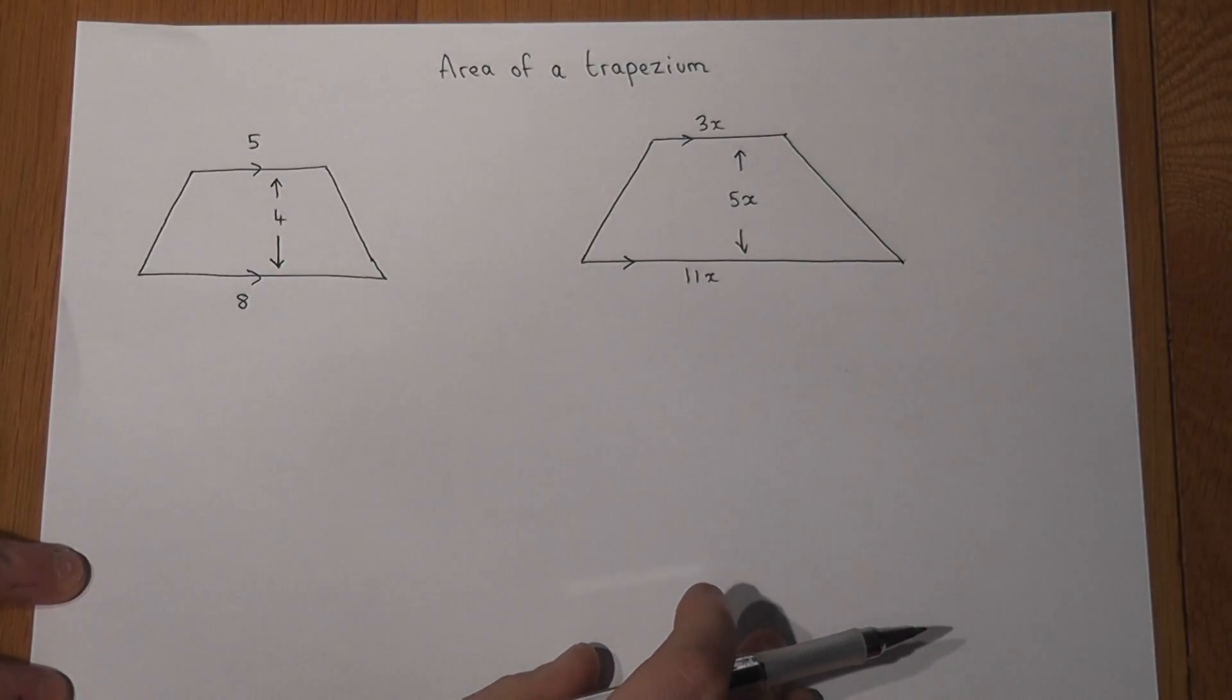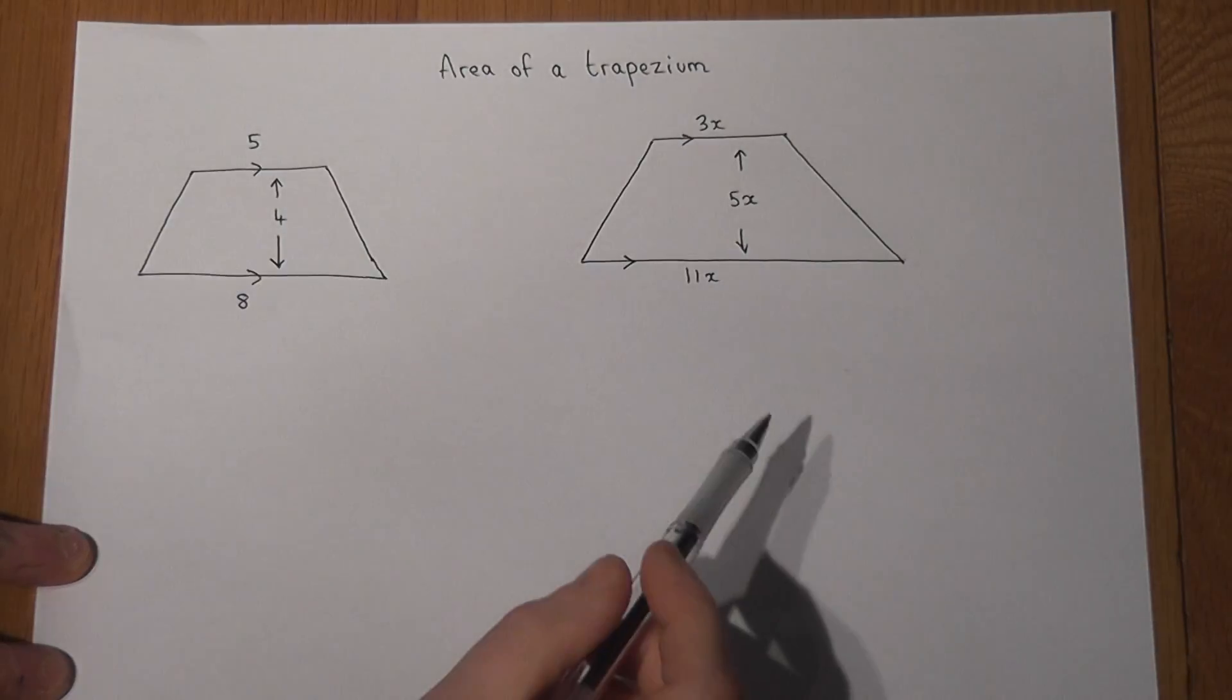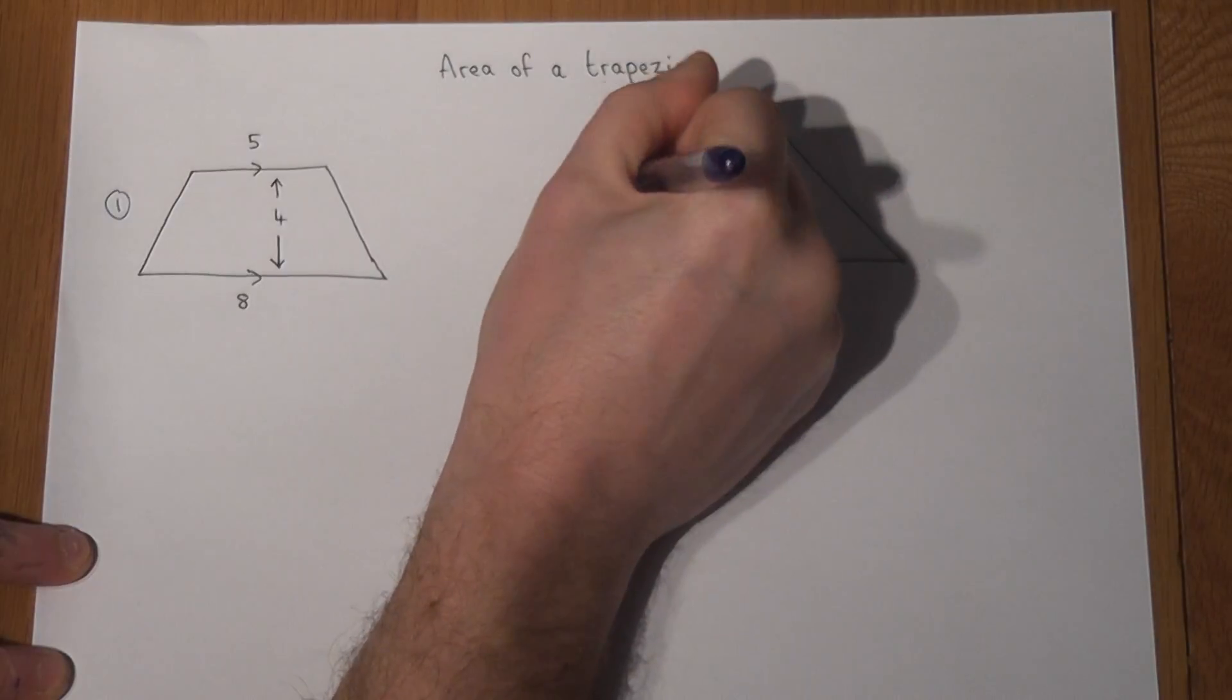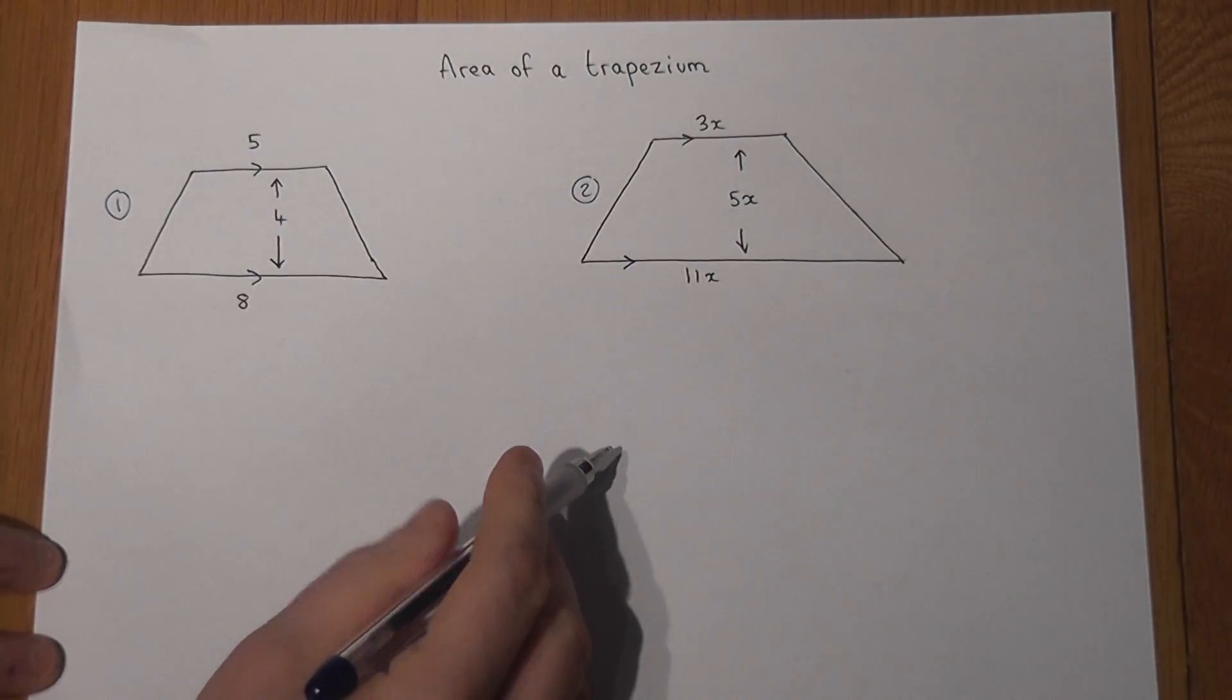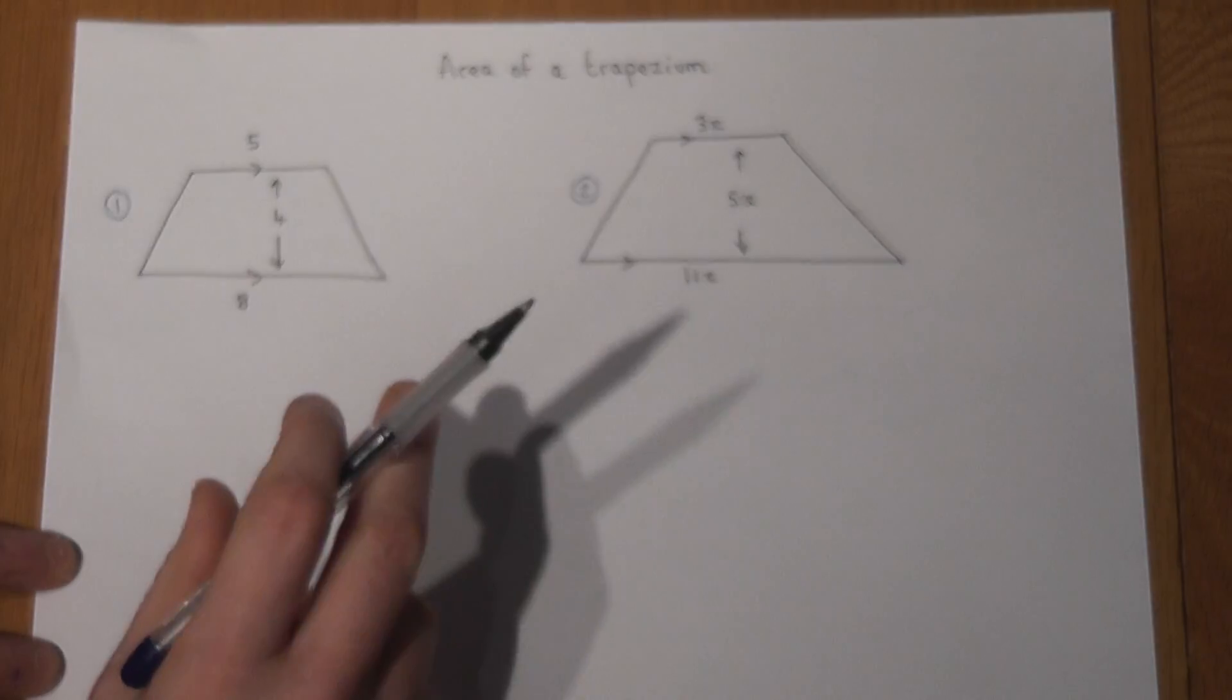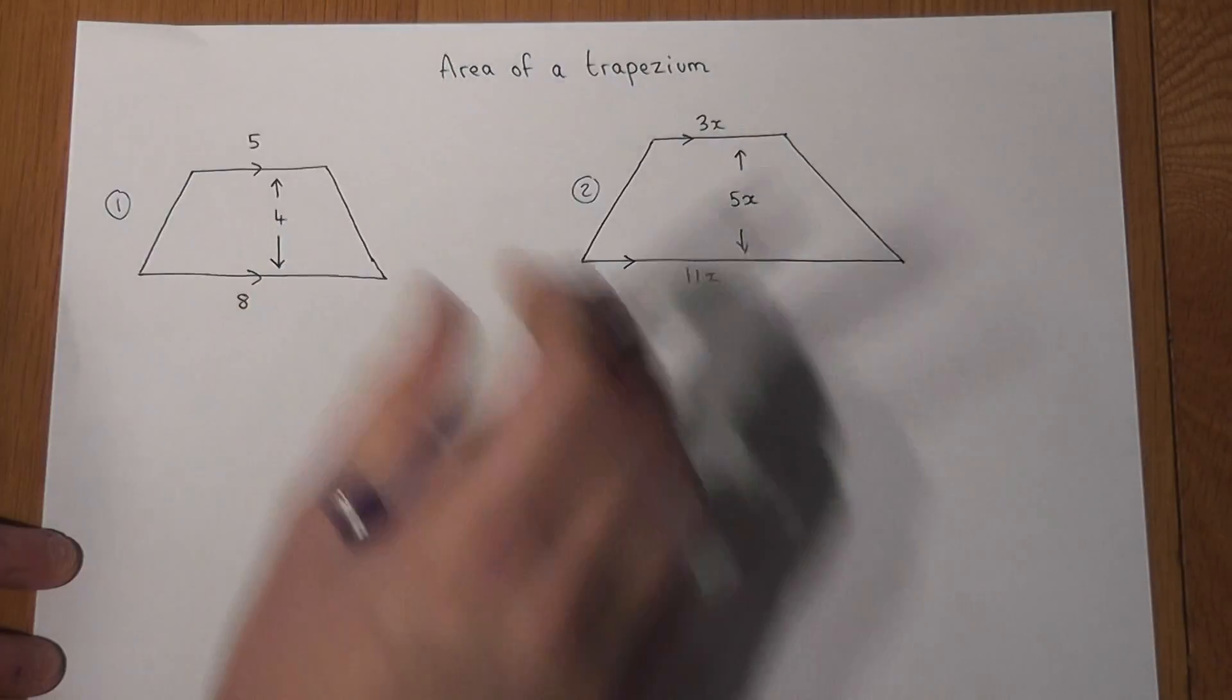This video reviews the key formula used to find the area of trapeziums. There are two examples here: one involving numbers, the second involving sides in terms of x, which in the end use the same process to work out a final answer.